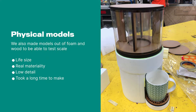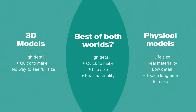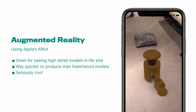We also did physical models, as any good industrial design class would do. They were life size, had real materiality, but they were really low detail and took a really long time to make. The great thing about them was you could put a coffee cup next to them and really see how that actually scales in real life. Being the nerd I was, I thought there's got to be a best-of-both-worlds scenario — high detail, quick to make, life size, and real materiality all in one. And luckily, there was: augmented reality.